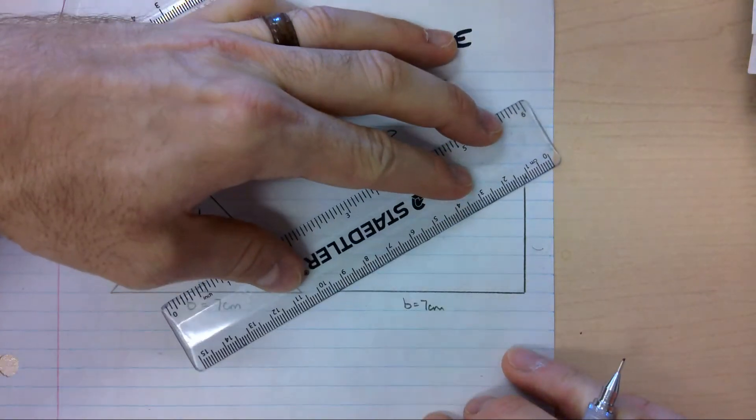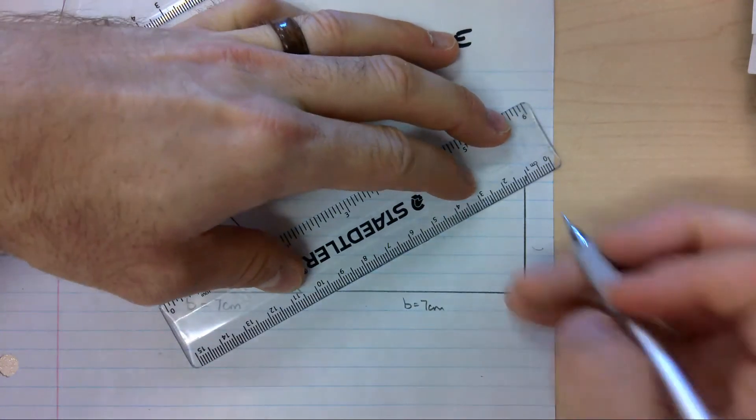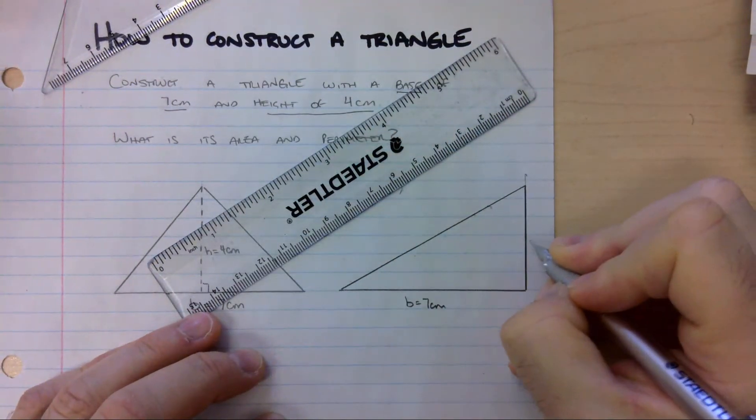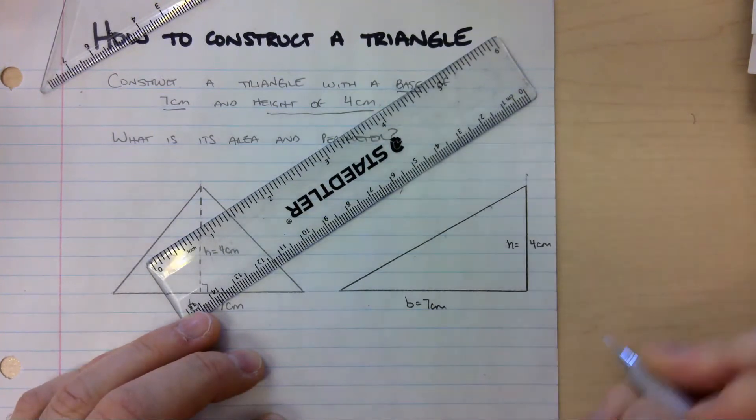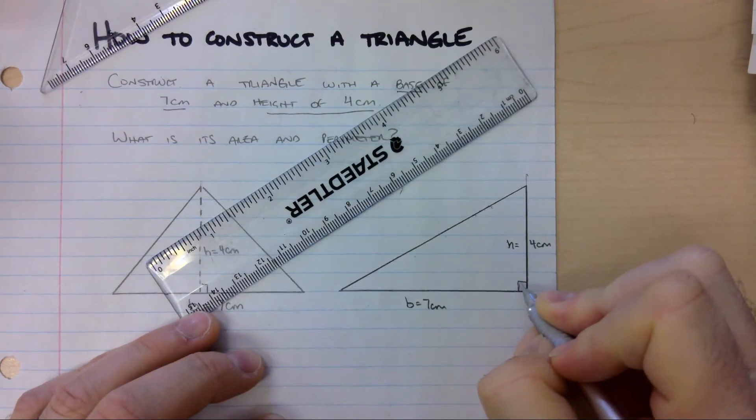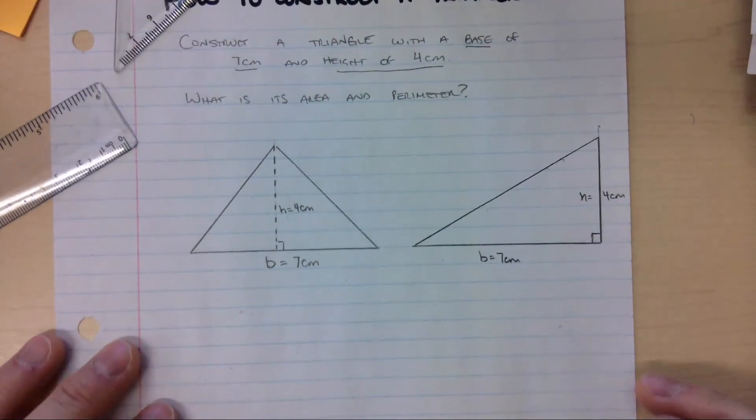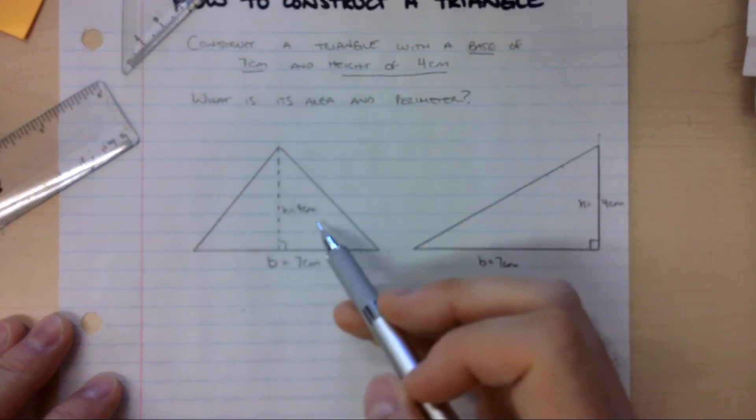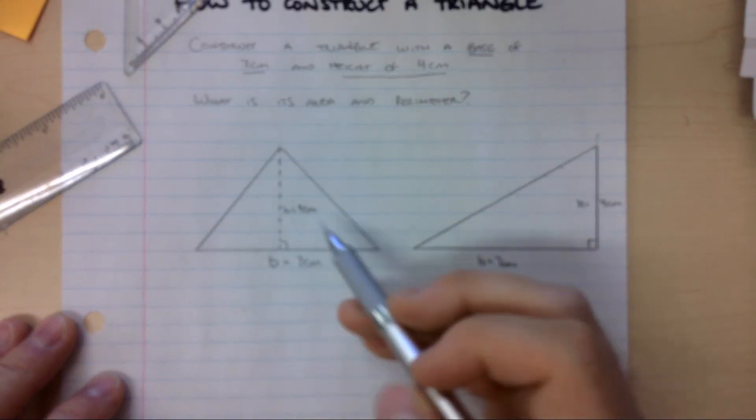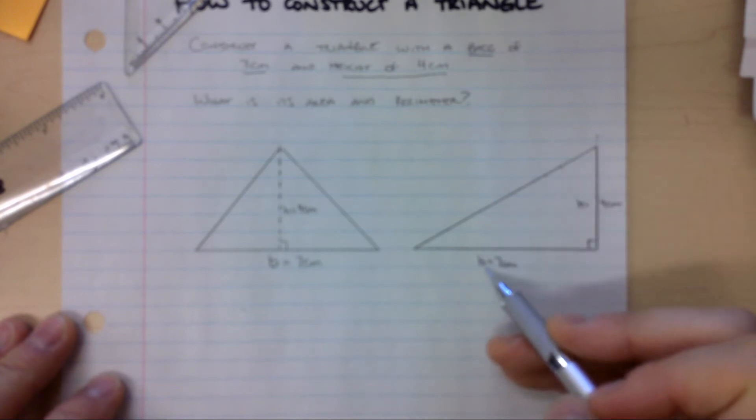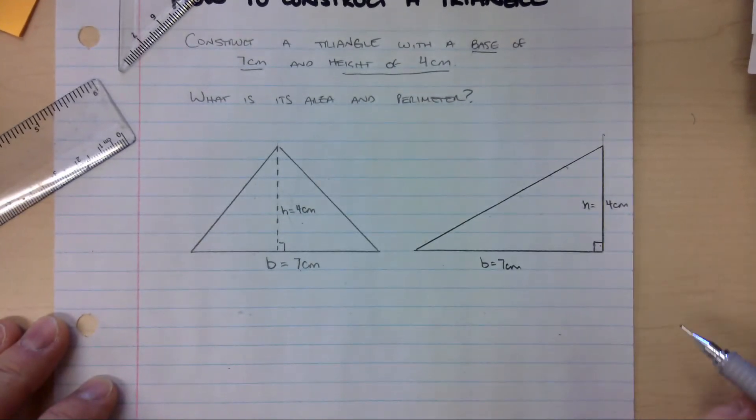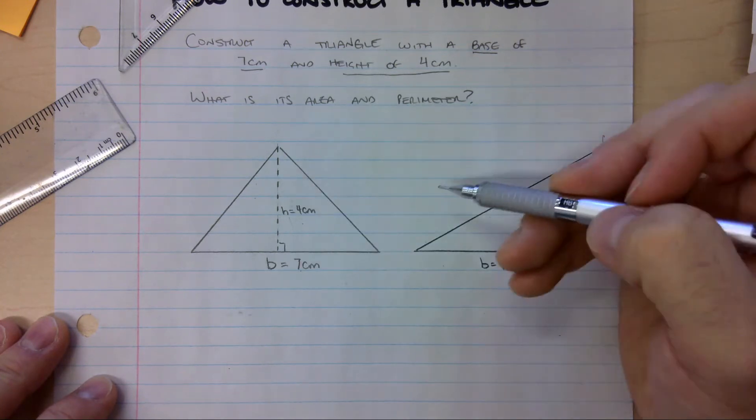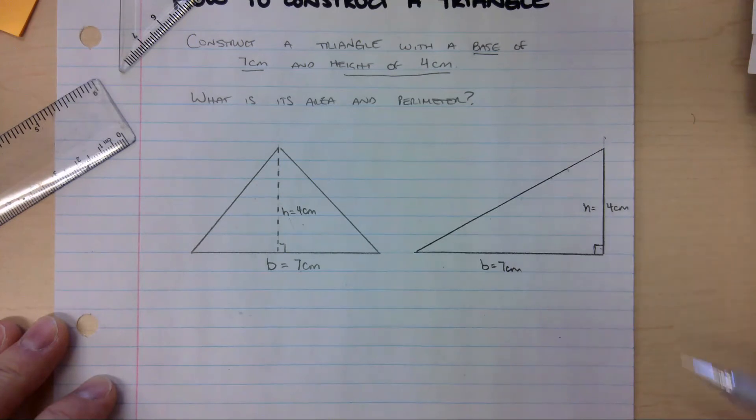And now all I have to do is connect these two sides to create the third side of my triangle. Here is my height. This is my 90 degree line. And you can see that both of these triangles are very different. But they are both right because I constructed a triangle that has three sides and my base is 7, my height is 4. Three sided polygon with a base of 7 and a height of 4. This is called a right angle triangle. This is called probably an acute triangle and it looks to be scalene, which means all three sides are different.